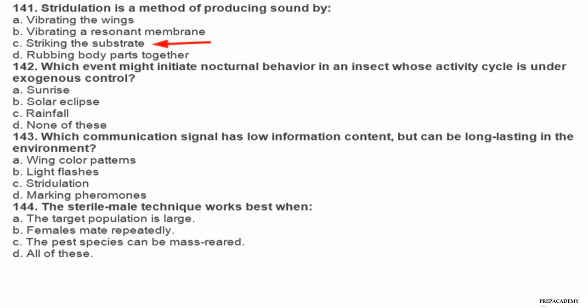Question 142. Which event might initiate nocturnal behavior in an insect whose activity cycle is under exogenous control? A sunrise, B solar eclipse, C rainfall, D none of these. Question 143. Which communication signal has low information content but can be long lasting in the environment? A wing color patterns, B light flashes, C stridulation, D marking pheromones. Question 144. The sterile male technique works best when: A the target population is large, B females mate repeatedly, C the pest species can be mass reared, D all of these.